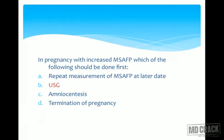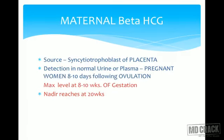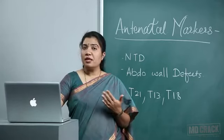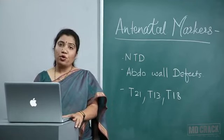The second marker is maternal beta-hCG. The source is the syncytiotrophoblast of the placenta. It can be detected in urine or plasma of pregnant women 8 to 10 days following ovulation. Maximum levels are obtained at 8 to 10 weeks of gestation and nadir is reached at 20 weeks. Elevated levels are seen in multifetal pregnancy, Rh incompatibility (erythroblastosis fetalis), Down syndrome, choriocarcinoma, and hydatidiform mole.